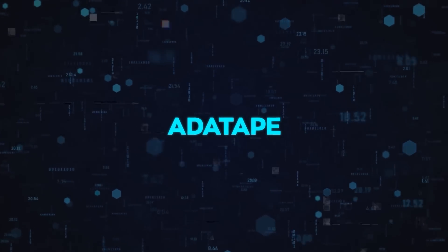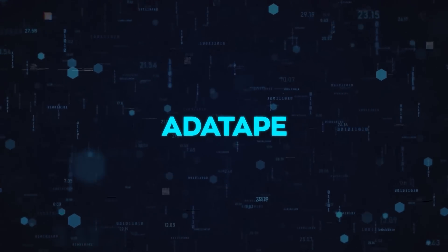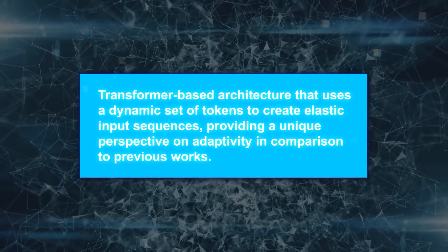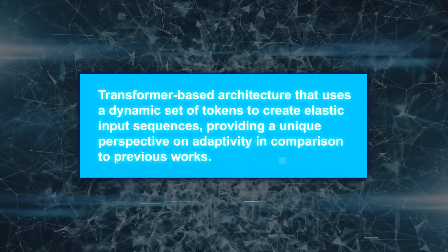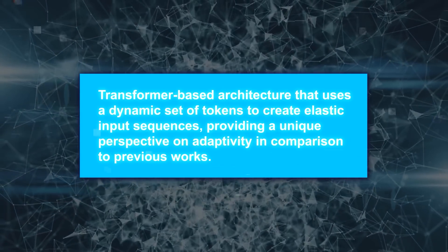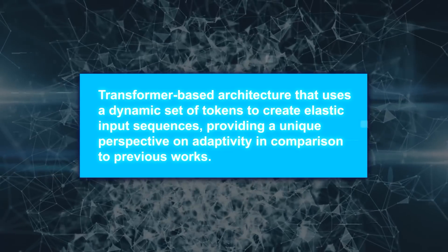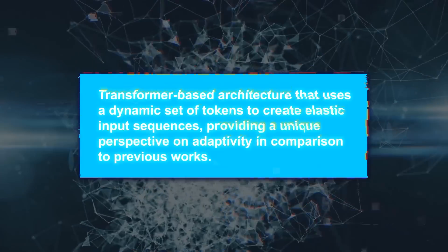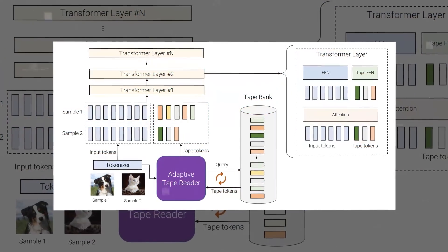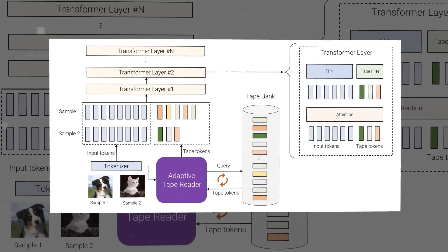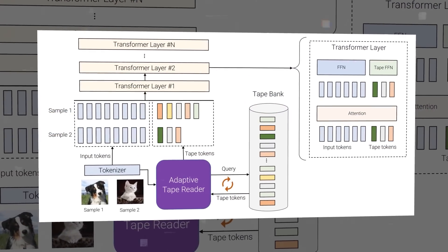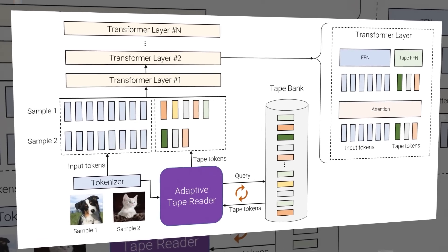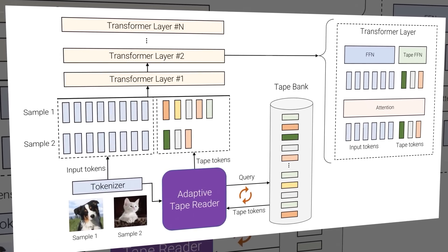AdaTape is a new model that utilizes adaptive computation in a novel and elegant way. It's a transformer-based architecture that uses a dynamic set of tokens to create elastic input sequences, providing a unique perspective on adaptivity in comparison to previous works. AdaTape is like a tape reader machine that reads data from a tape and makes calculations, and it can adjust itself to understand various tokens added to the input based on its complexity.